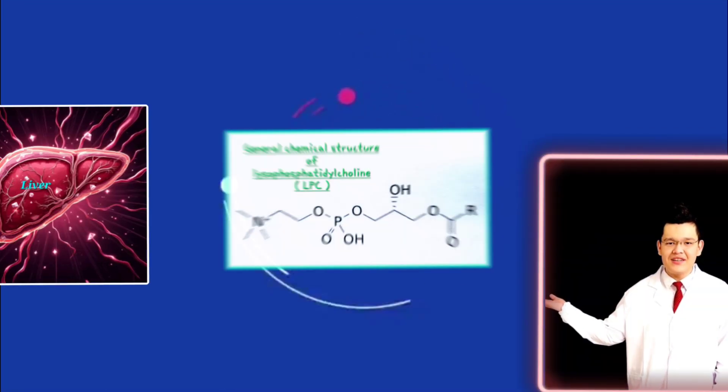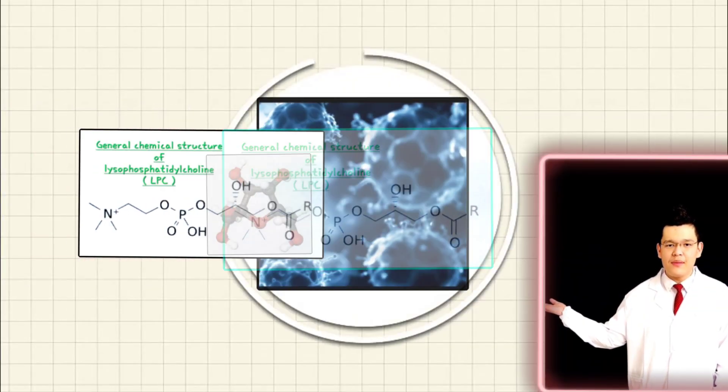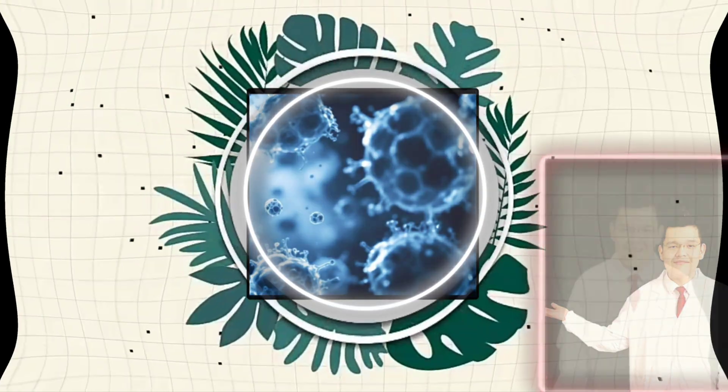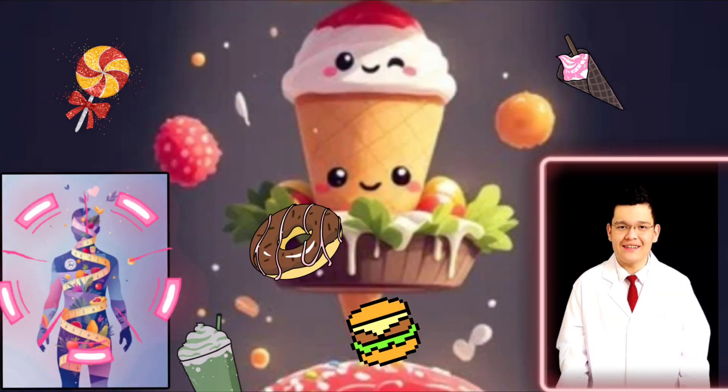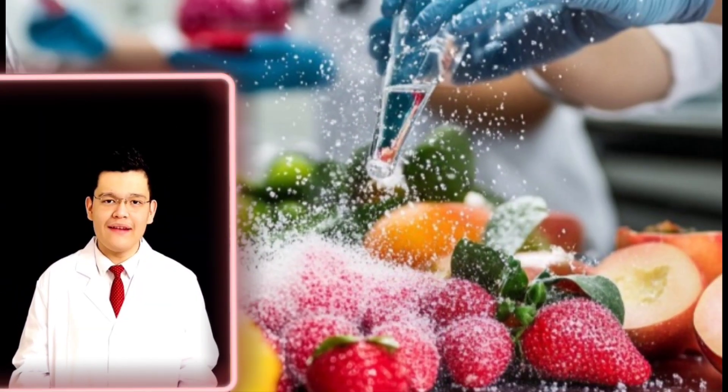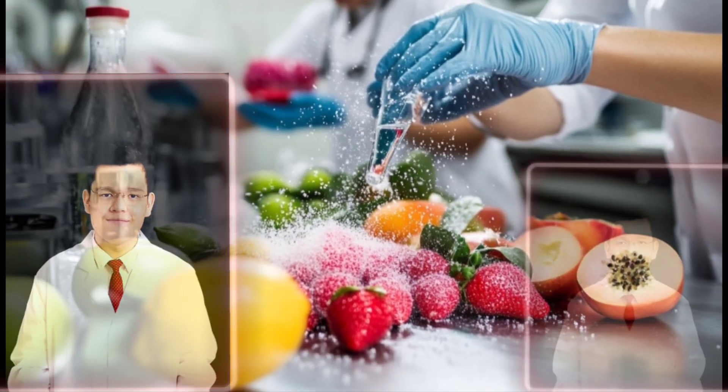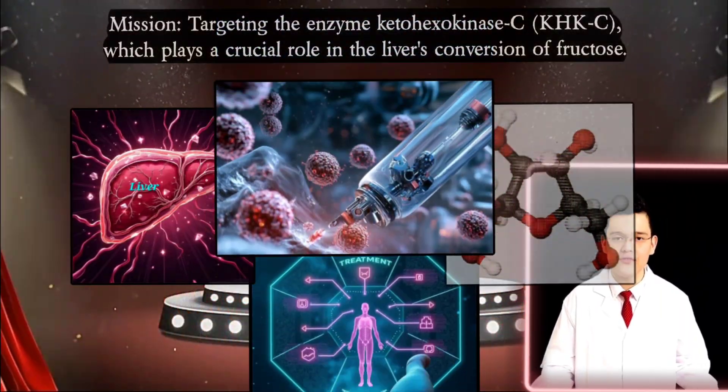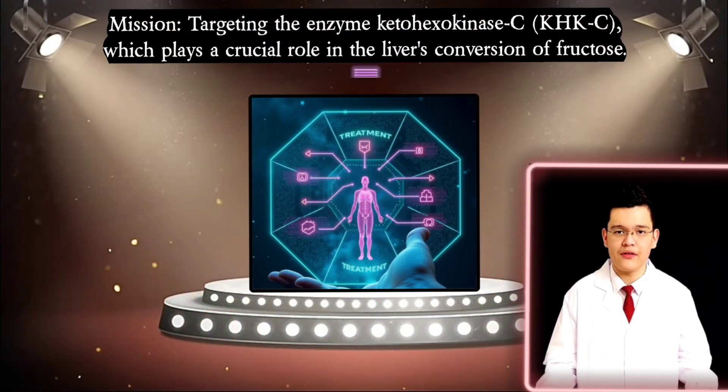LPC is especially noteworthy, as it may be one of the most effective ways to support tumor growth. As a result, reducing fructose intake is the best approach to counteract its effects. However, fructose is widely used in the food industry. Therefore, new treatments could be developed to block the liver's conversion of fructose to prevent it from promoting tumor growth.